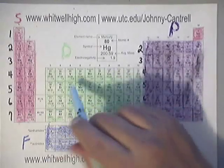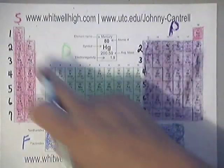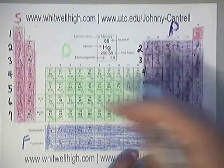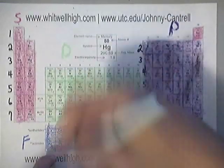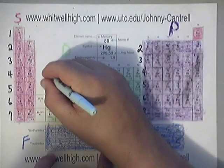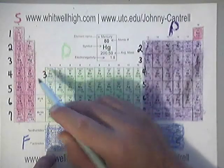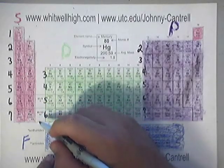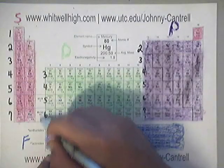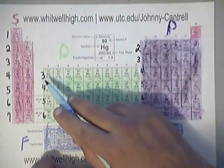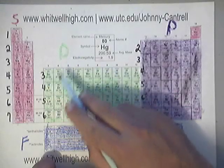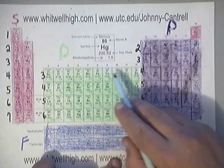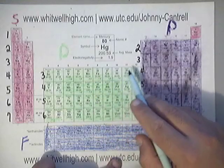Now as far as this D block goes, it's kind of weird. Notice that the S block started out with one, the P block started out with two. Well this D block will start out with — three. So the rows here are three, four, five, and six. The D block itself will start out 3D1, 3D2, 3D3, 3D4, 3D5, 3D6, 3D7, 3D8, 3D9, 3D10. The D block goes all the way through ten.